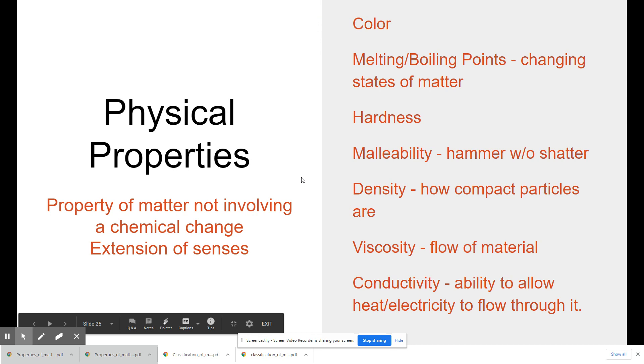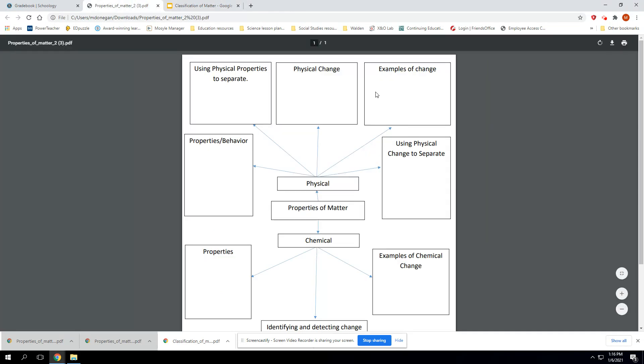Alright, so physical properties. This is going to just go into the properties of matter. Property of matter not involving a chemical change. So a physical property is something where it's not involving any kind of a chemical change to happen. A lot of it can be like an extension of your sense, like a physical property is the color of something. When you change the state of matter of something, this is going to kind of go hand in hand with the behaviors.